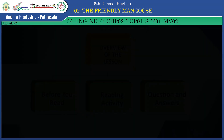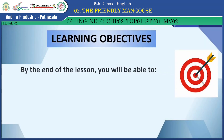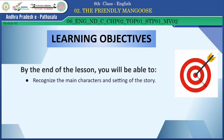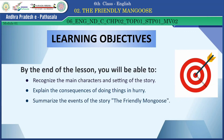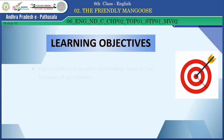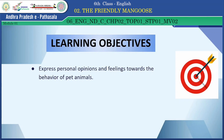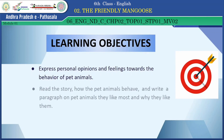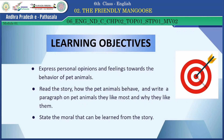Learning objectives. By the end of the lesson, you will be able to recognize the main characters and setting of the story. Explain the consequences of doing things in a hurry. Summarize the events of the story, The Friendly Mongoose. Describe the love of pet animals. Express personal opinions and feelings towards the behavior of pet animals. Read the story, how the pet animals behave, and write a paragraph on pet animals they like most and why they like them. State the moral that can be learned from the story.